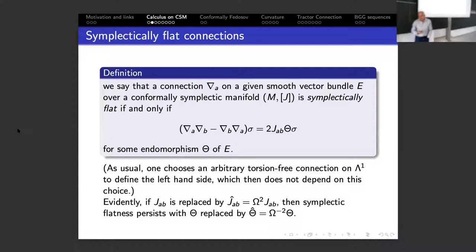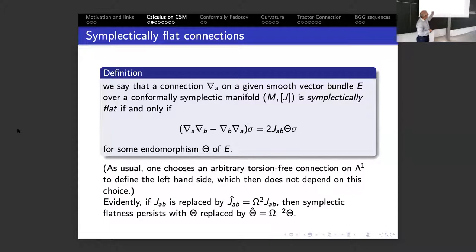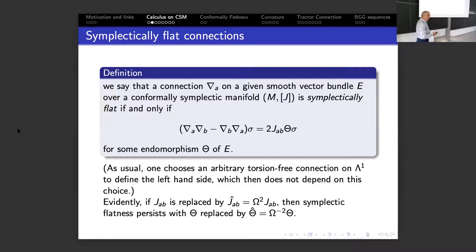A very important notion: if we take a smooth vector bundle E over a conformally symplectic manifold, we say a connection on such a bundle is symplectically flat if the commutator of the covariant derivatives has the property that it equals J times some endomorphism theta of E — that is, it is algebraic on E times a multiple of J. If you take another J in the conformal class you will have the same property with accordingly rescaled theta. This is a very crucial definition for us.